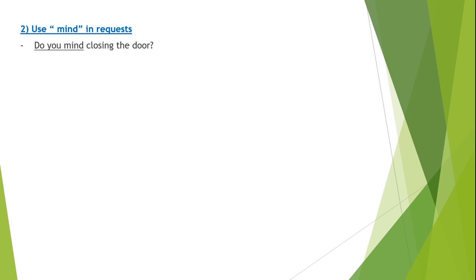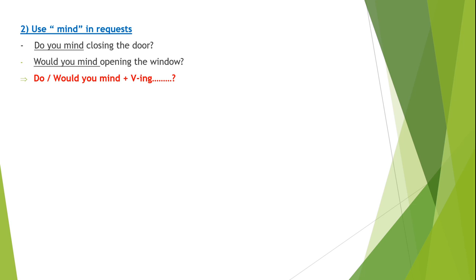Ví dụ: 'Do you mind closing the door?' — Bạn có phiền đóng dùm tôi cái cửa hay không? Hoặc: 'Would you mind opening the window?' — Bạn có phiền mở dùm tôi cái cửa sổ hay không? Đằng sau 'do you mind' và 'would you mind,' cô dùng động từ ở dạng verb -ing. Công thức: Do you mind / Would you mind + verb -ing — dùng để yêu cầu người khác làm gì cho mình.